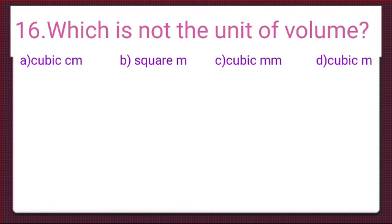So option B is the correct option and we will put a tick mark at option B, that is square metres, because square metres is not the unit of volume.